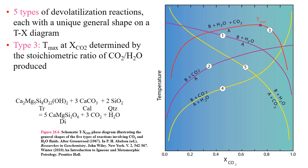There must be a thermal maximum to type 3 reactions in the TX fluid diagram. Any reaction that does not liberate or consume H2O or CO2 will not be affected by the composition of carbon dioxide and will form horizontal lines on the TX fluid diagram.